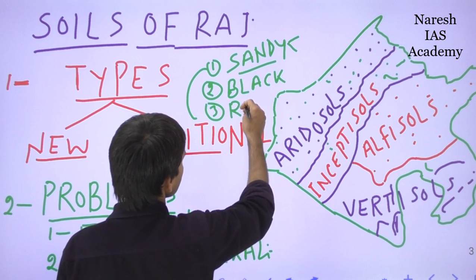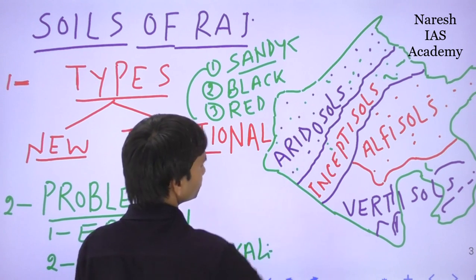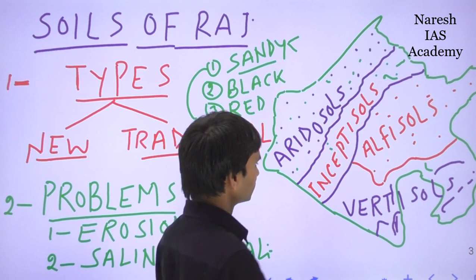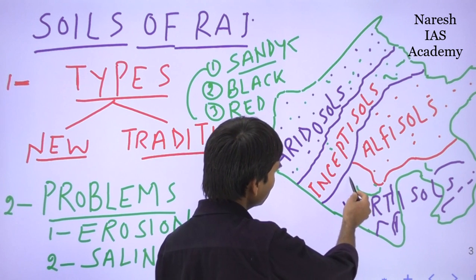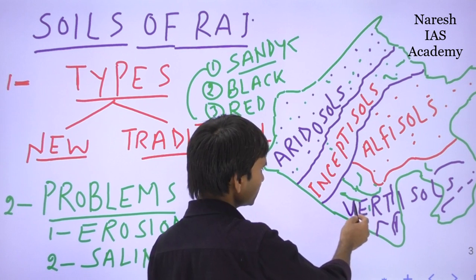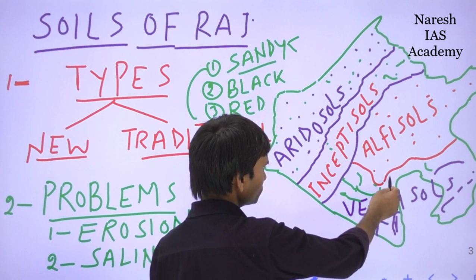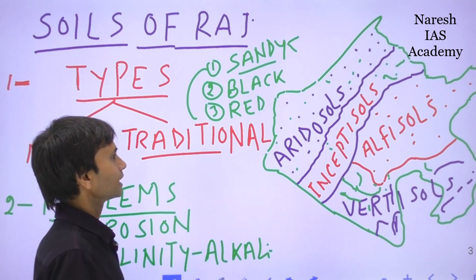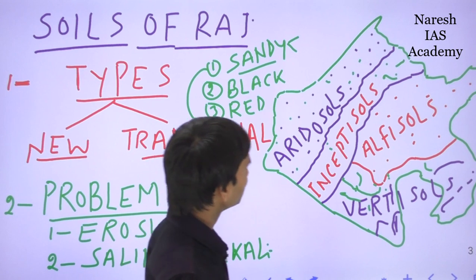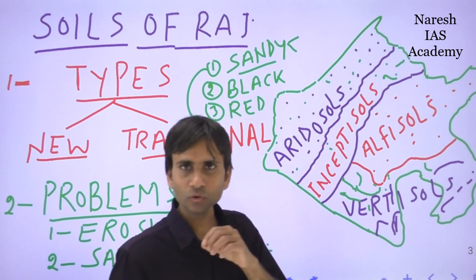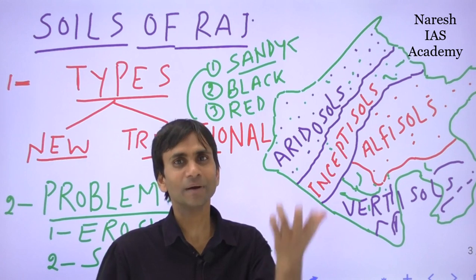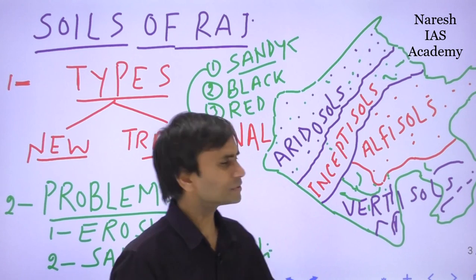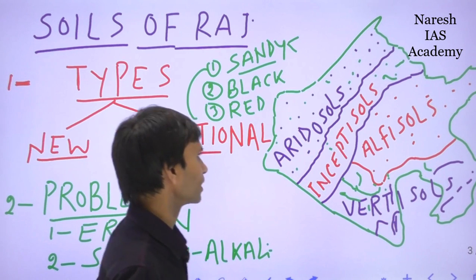The third is red soil, sometimes called red loamy soil. This is found mainly in southern Rajasthan in parts of Udaipur, Dungarpur, Banswara, Chittorgarh, and Bhilwara. There is also a mixture of red and black soil, which is a sub-category found in the Hadothi plateau in some interior parts of these districts.